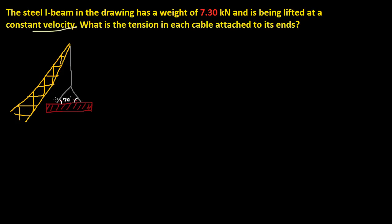It's talking about these two cables, and it's moving at a constant velocity, which means acceleration is zero. There is a gravitational force acting downward with g = 9.8 meters per second squared.